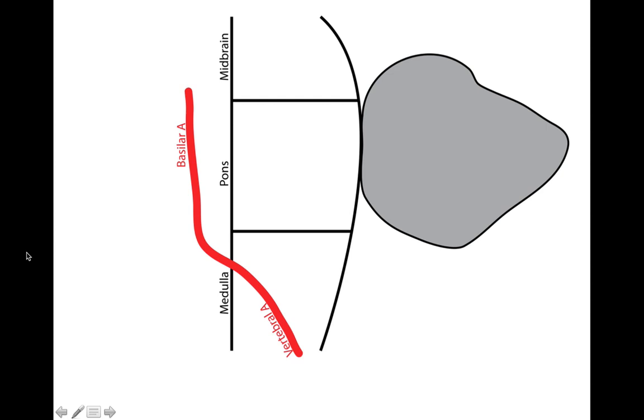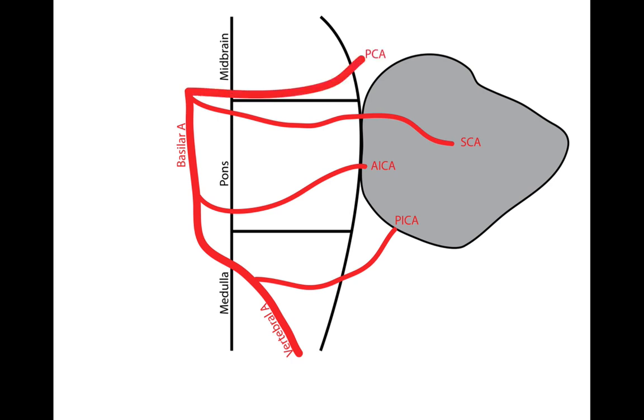Okay, adding in some vasculature, we've got the vertebral artery feeding the basilar, and then coming off the vertebral artery, notice it's the vertebral, not the basilar artery, but coming off this vertebral artery is the PICA. Coming off the basilar is the AICA, also the SCA, and then finally the basilar terminates in the PCA.